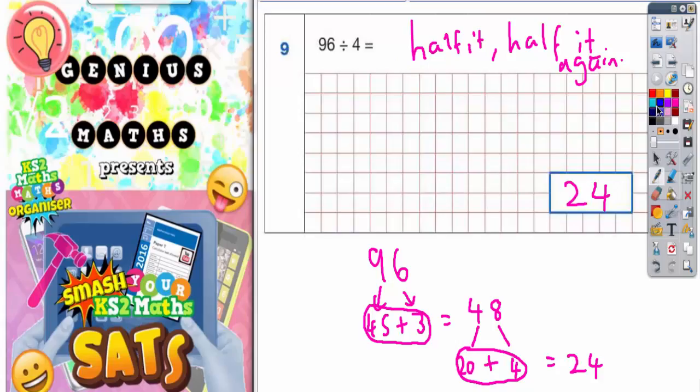But there is another way of doing it. You could actually do a bus shelter method with 96 in there like that and divide it by 4.